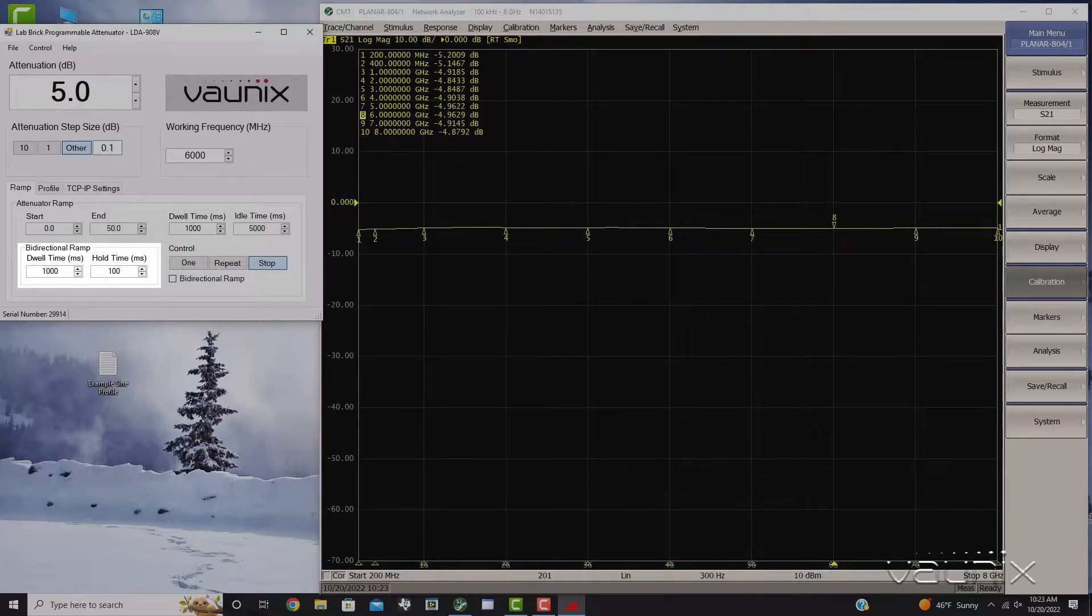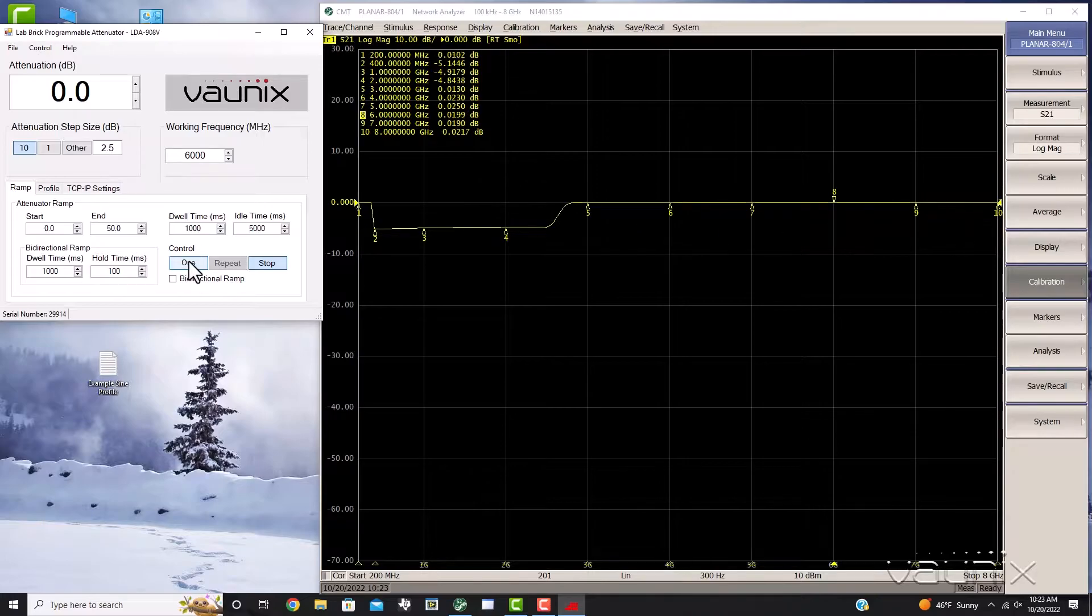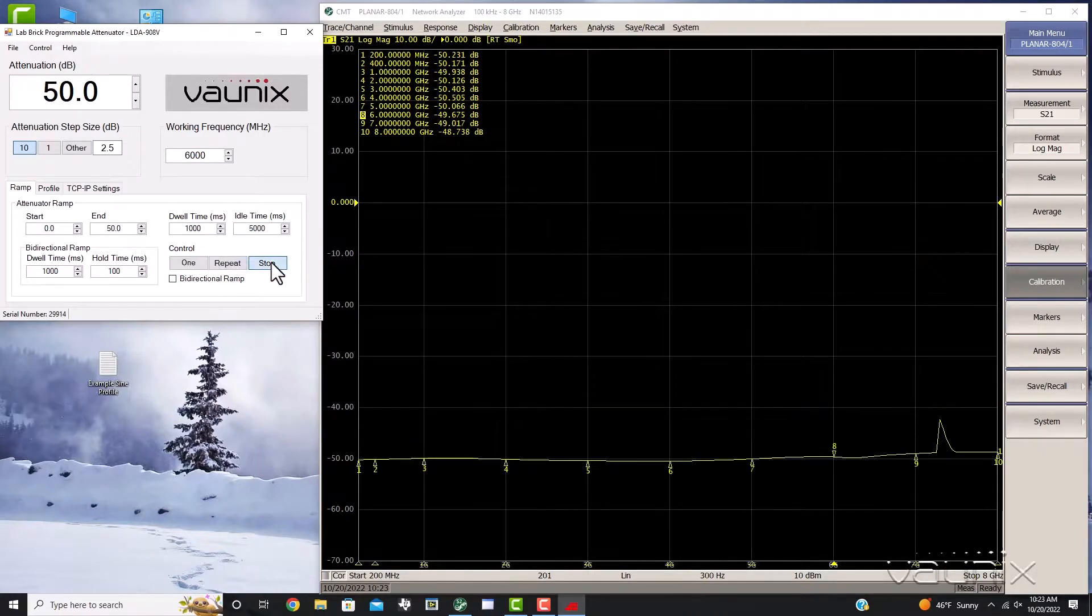If you want to perform a bidirectional ramp, you just have to set the dwell and hold times. Bidirectional dwell time is the time the attenuator stays at each attenuation setting from the end to the start values. Hold time is the period the attenuator waits after the ramp is completed. You can sweep once by selecting one time or repeat to repeatedly sweep from the start to the end attenuation level. You can always end the sweep by pressing the stop button.